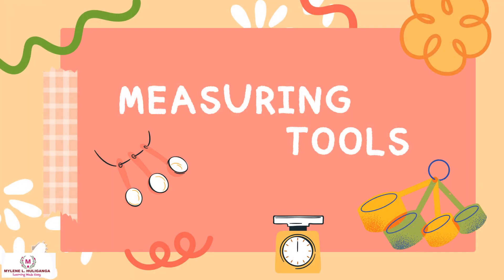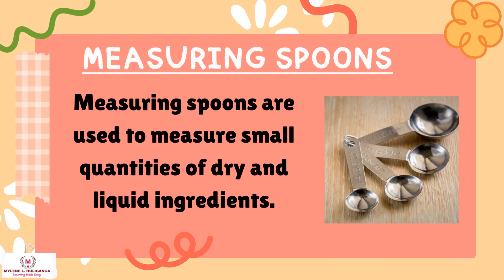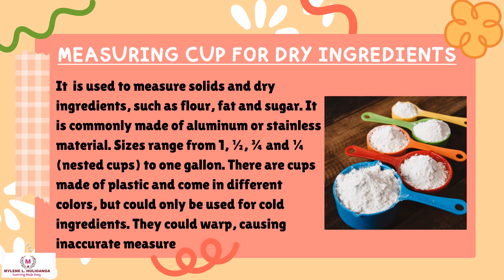The following are the kitchen measuring tools. First is the measuring spoon. Measuring spoons are used to measure small quantities of dry and liquid ingredients. The measuring cup for dry ingredients is used to measure solids and dry ingredients such as flour, fat, and sugar.